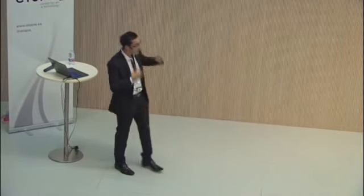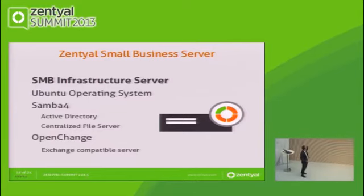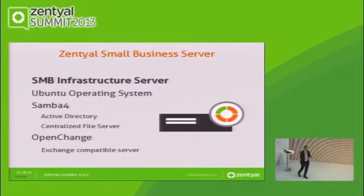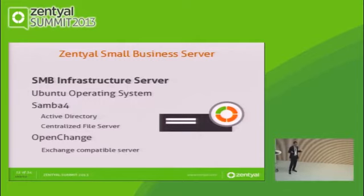Now, if we just rewind — we were talking about this small business server from Microsoft. What is the small business server from Zentio? We have Ubuntu as the operating system, Samba to provide the centralized file system and the Active Directory, and the last component is OpenChange, which is a Microsoft Exchange-compatible server. You don't need any connector, you don't need any additional fee, you don't need to pay for any CAL — it just works out of the box.